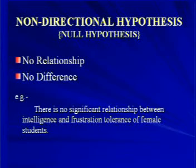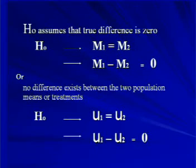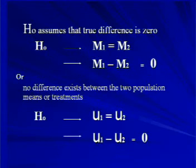The next type is non-directional or null hypothesis. They show no relationship or difference between the independent and the criterion variable. For example, there is no significant relationship between intelligence and frustration tolerance of female students. Null hypothesis assumes that the true difference between means of two variables is zero — that is, mean of first variable equals mean of second group, or mean of first group minus mean of second group equals zero. It can also be stated as: no difference exists between the two population means or treatments.